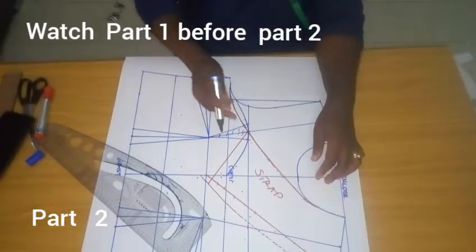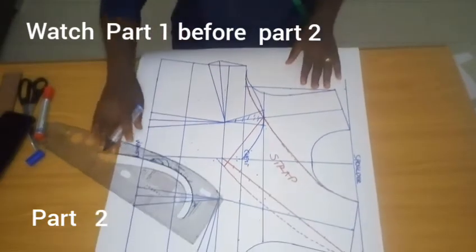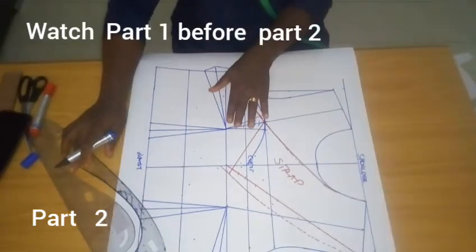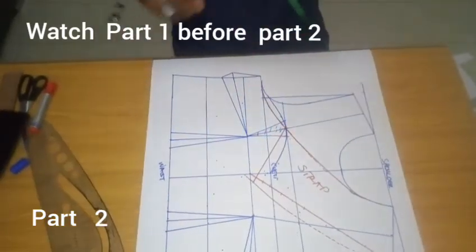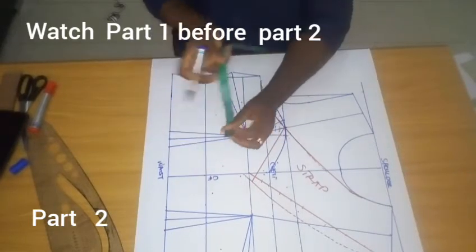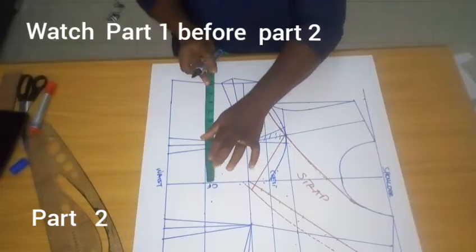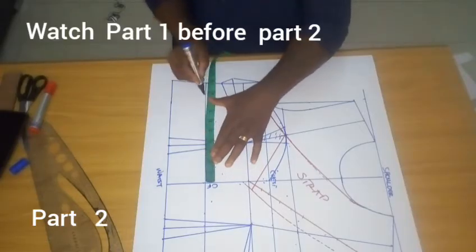These are all my bustier line, but remember the strap is built inside it. We are done with this part. We want to contour the underbust. This is the center front. So for the contouring of the underbust from the center front, I take my underbust circumference divided by 4.